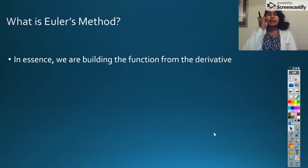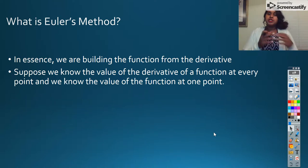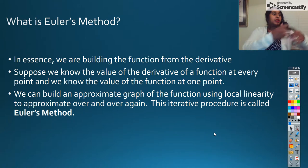What is Euler's method? In essence, we're trying to build a function from a derivative. Suppose we know a lot of information about the derivative of a function, especially XY points, and some information about function points, specifically at a single point. You can build an approximate look of what that graph is going to look like using what we call local linearity.